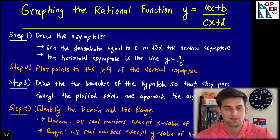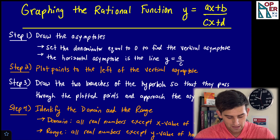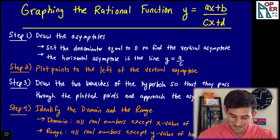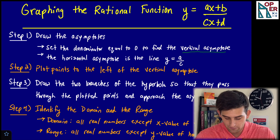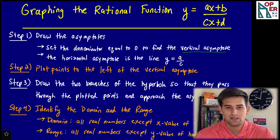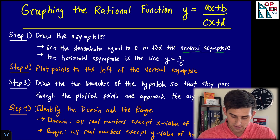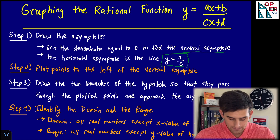Step number one: we know we need some asymptotes because we have a rational function, so we're going to have a vertical and a horizontal asymptote. For the vertical asymptote, we set the denominator equal to zero and solve for x. That gives us our vertical asymptote, since a vertical line is x equals a number. The horizontal asymptote is simply the line y equals a divided by c — the coefficients before x divided by each other.